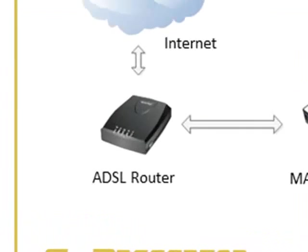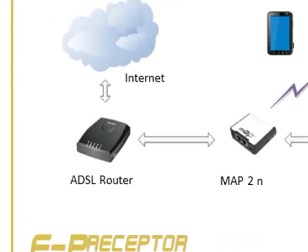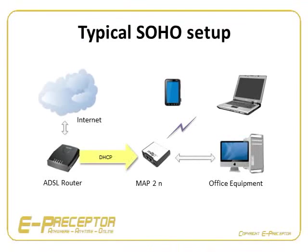You will typically have a wireless or a DSL connection to an Internet service provider ending up in a router, redistributing the Internet via DHCP-enabled copper interface to your local network. This DHCP server connection will automatically supply the needed IP address, gateway and DNS settings to your MikroTik router.